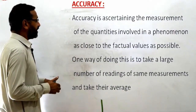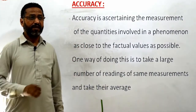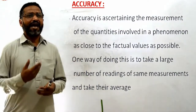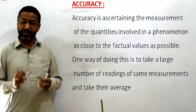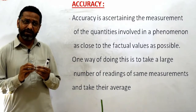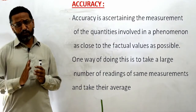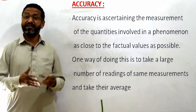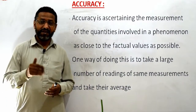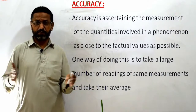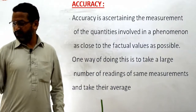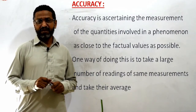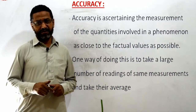Accuracy: accuracy is ascertaining the measurement of the quantity involved in a phenomenon as close to the factual value as possible. جتنا ہم correct value کے نزدیک ہوں گے، اس کو accuracy کہتے ہیں. The way of doing this is to take different readings and then take the average — جیسے practicals میں کسی بھی device سے تین یا زیادہ readings لے کر ان کا average نکالتے ہیں. اس topic میں ہم نے rounding off data، error، types of errors، اور accuracy پڑھا — thank you very much.